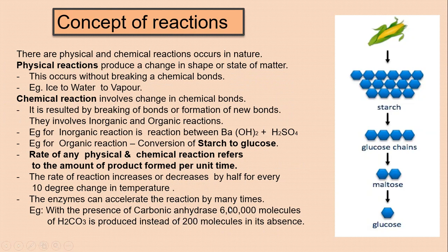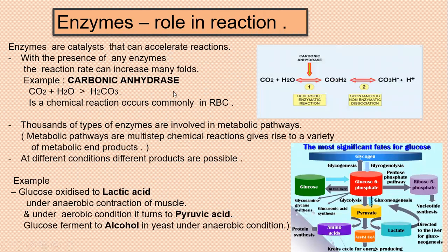In the absence of enzyme, only about 200 molecules are produced, but with carbonic anhydrase, 6 lakh molecules are produced per hour. That reaction occurs in RBCs — red blood cells — involving the conversion of carbon dioxide. Carbonic anhydrase acts as the fastest enzyme in the world and is involved in the metabolic pathway.